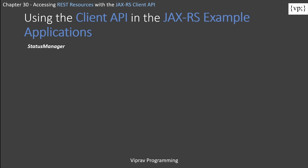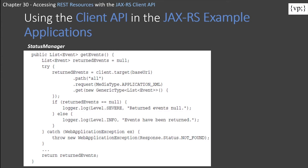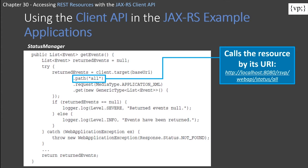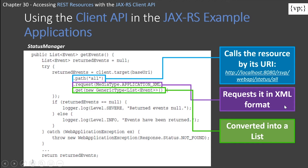Now, looking into using this client API in the JAX-RS example applications. If you remember from the previous episode, we had covered the RSVP example, where an invitee can respond to an invite whether or not they will arrive. In the status-managed CDI backing bean, it retrieves all the current events from the system. You can see that it first calls the resource by its URI — shortened to 'all', but the full form would be HTTP localhost 8080, RSVP, web API, status, all. Then it requests it in an XML format, which is then converted into a list shown to you as a table.